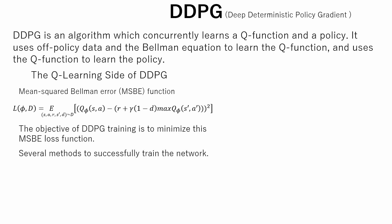There are several methods used to successfully train the network. The first is replay buffer. This is the set of previous experiences. In order for the algorithm to have stable behavior, the replay buffer should be large enough to contain a wide range of experiences, but if we use too much experience, you may slow down the learning.